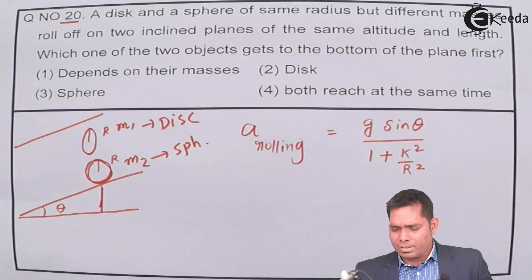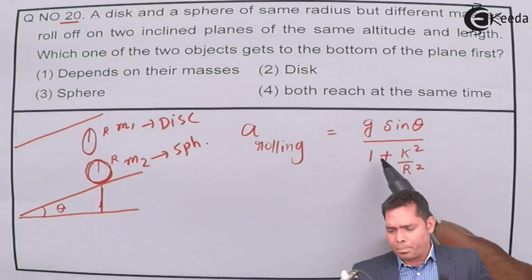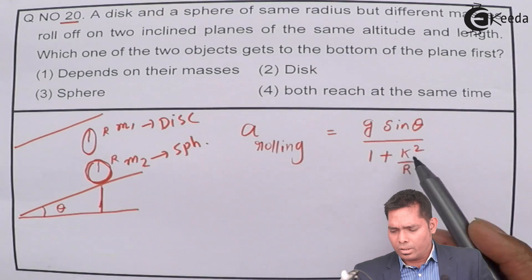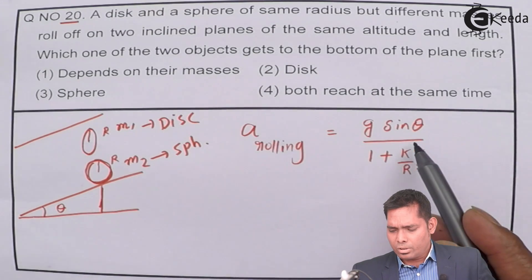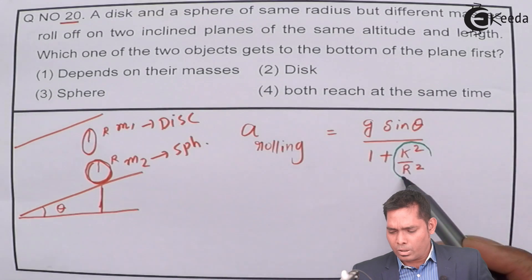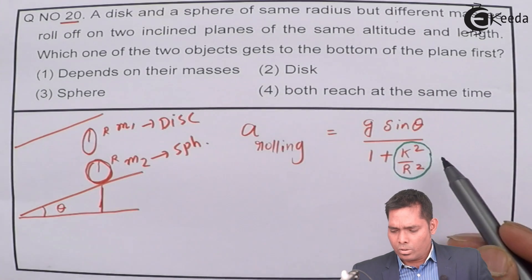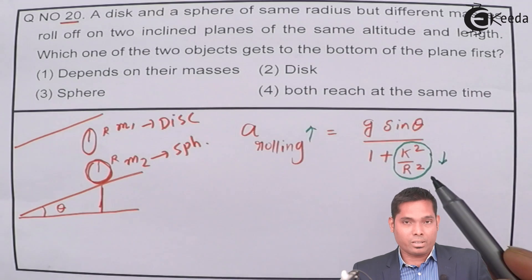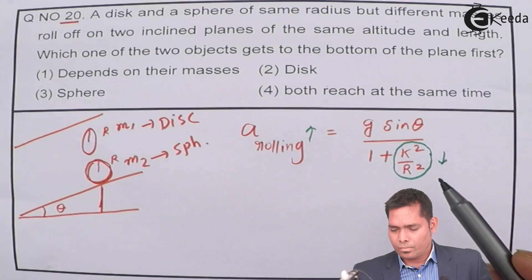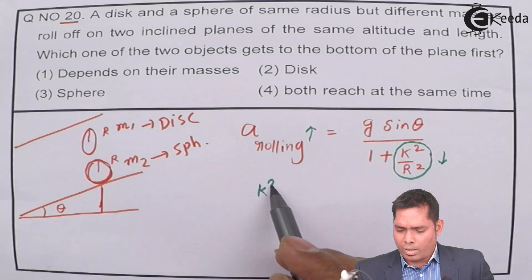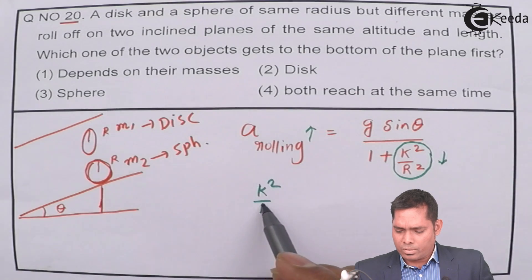The acceleration is inversely proportional to (1 + k²/r²). So the object with the smaller value of k²/r² will have greater acceleration. Let us check k²/r² for each object.